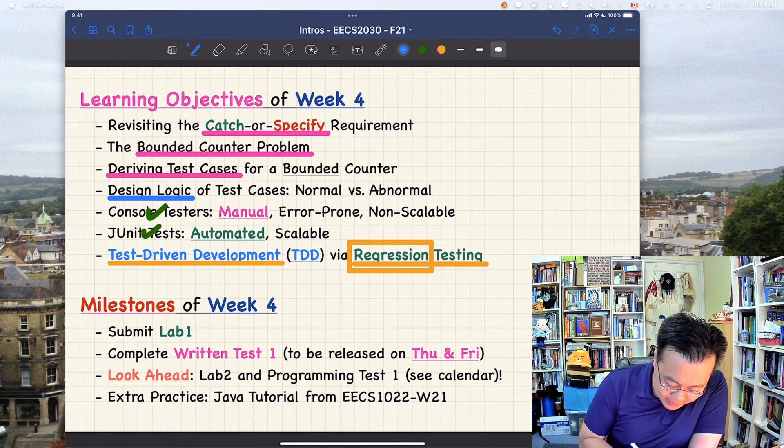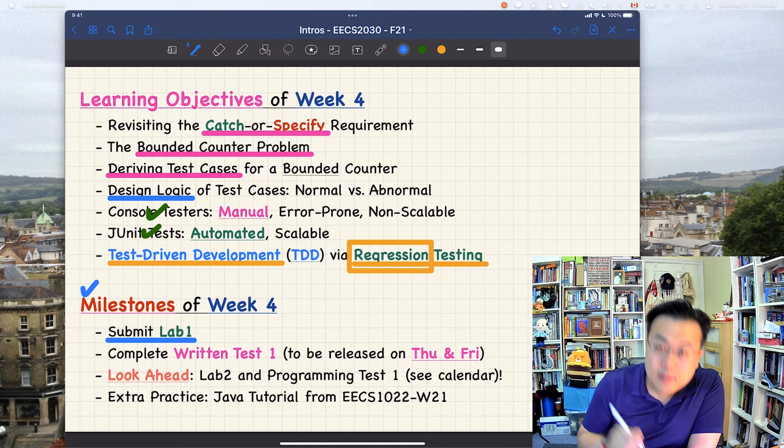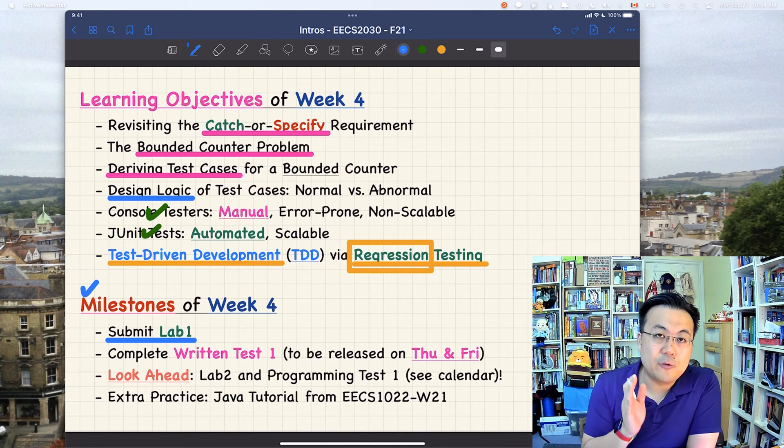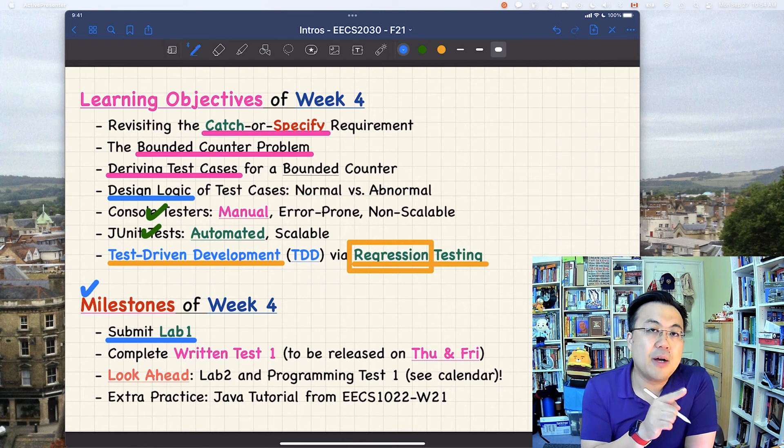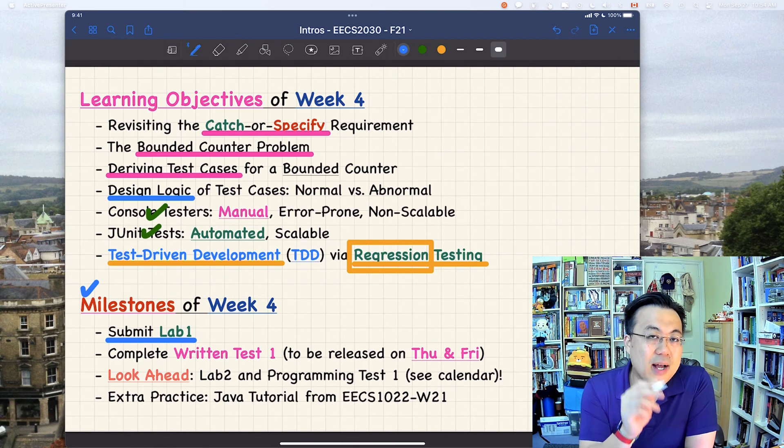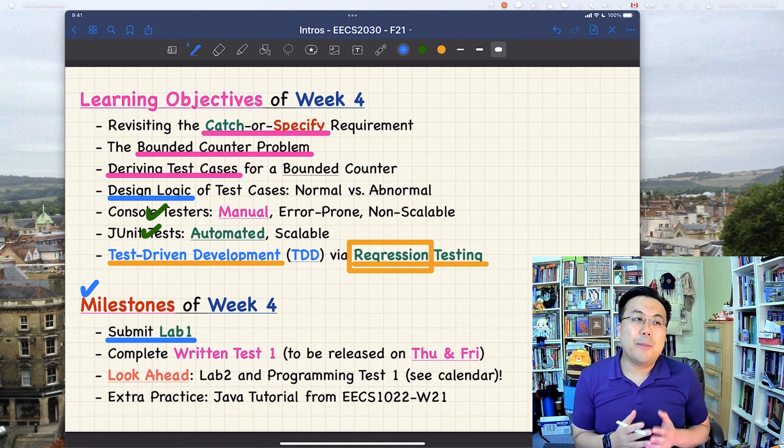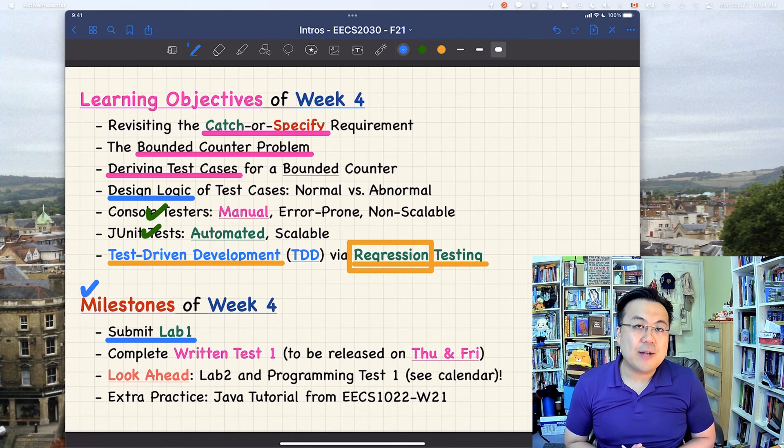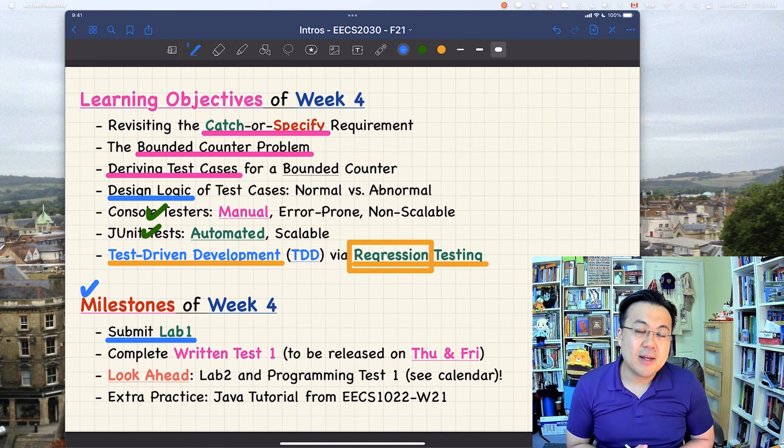So what about the milestone for week number four? So you will have to submit your lab number one. The normal deadline will be Friday, 2 p.m. EST. The deadlines are strict, no extension. So please make sure you allow yourself time to actually submit your lab one. And for this week, notice that we also got our written test one, whose submission is also closed at the same time, 2 p.m. EST on Friday. So you want to make sure if you really want to do both of them around the same time, it's your choice. But it will be your responsibility to make sure you actually submit both of them in time. So you have to respect the deadline.